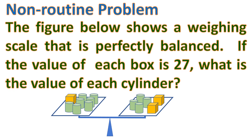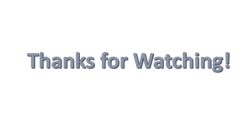Let me give you another non-routine problem. The figure below shows a weighing scale that is perfectly balanced. If the value of each box is 27, what is the value of each cylinder? I will not give the answer yet so you have enough time to think it over. Please write your answer in the comment section so I can check if it's correct. Good luck and have fun solving! Thanks for watching — please subscribe and write the math topics you want to learn in the comments.